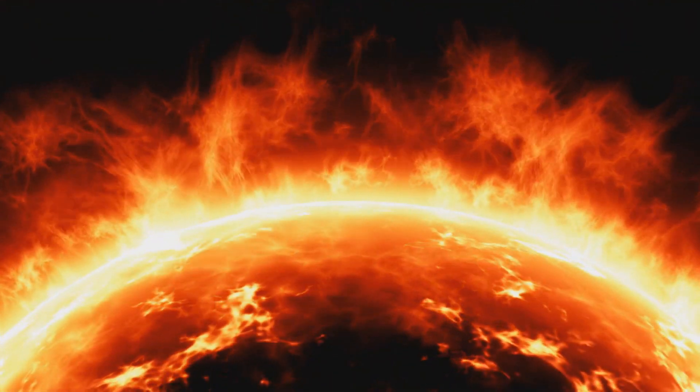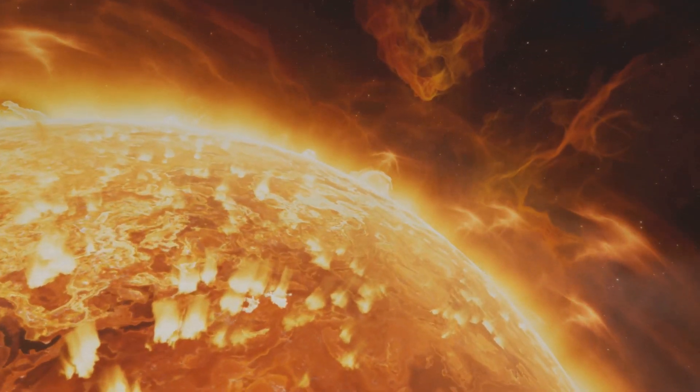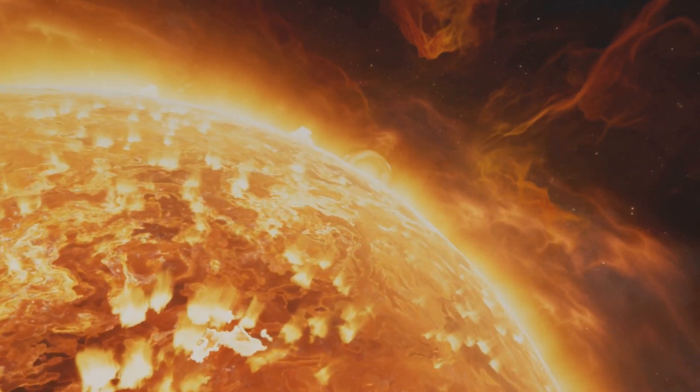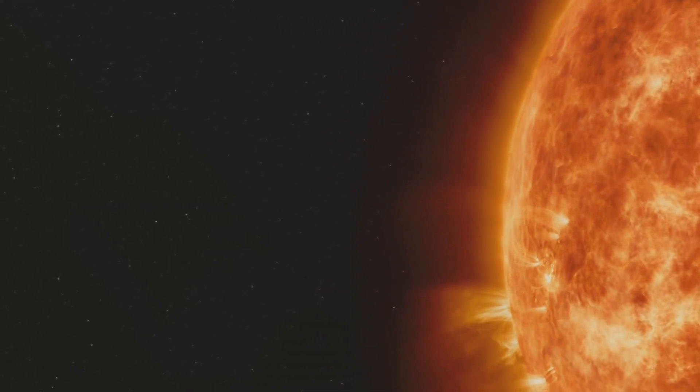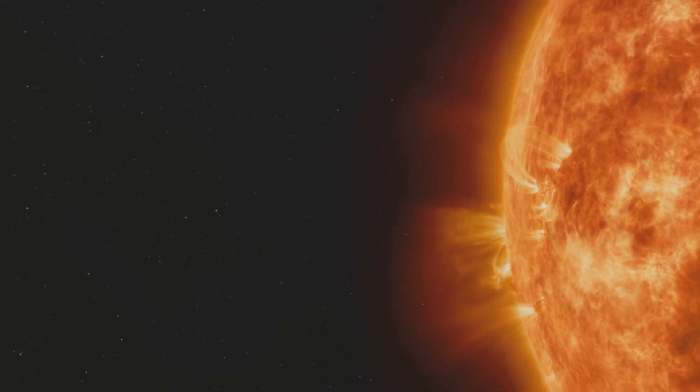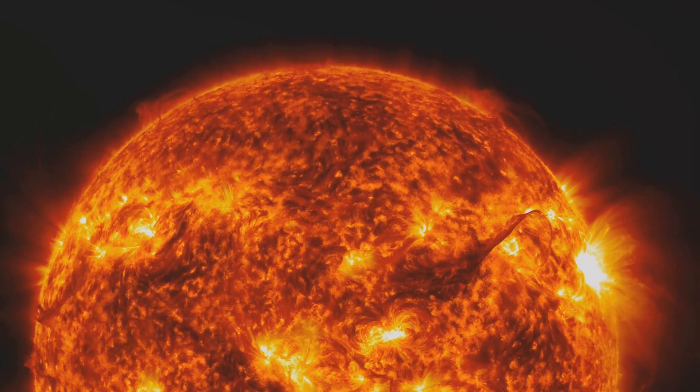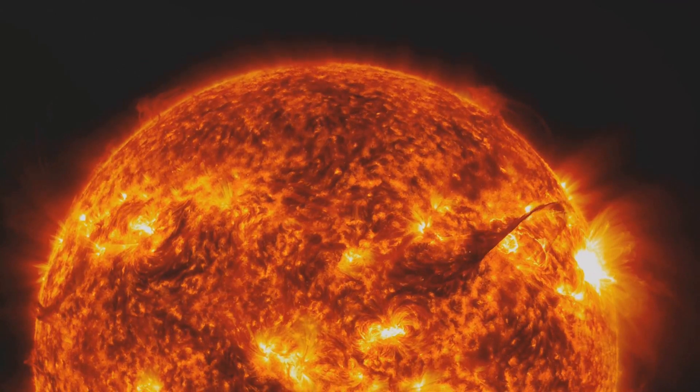At number seven, we have solar flares. These are colossal bursts of radiation and magnetic energy that explode from the sun's surface, hurtling through space at incredible speeds. They're the solar system's most spectacular fireworks display, yet they pose a significant threat to our humble home, Earth.